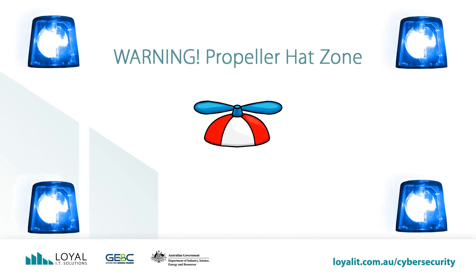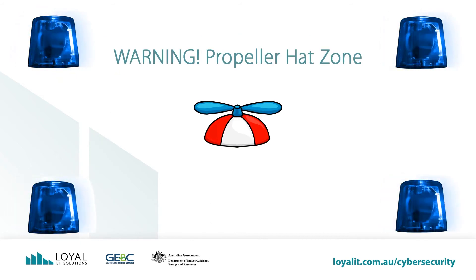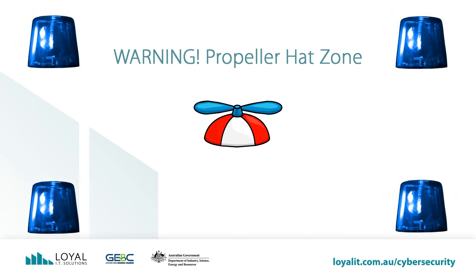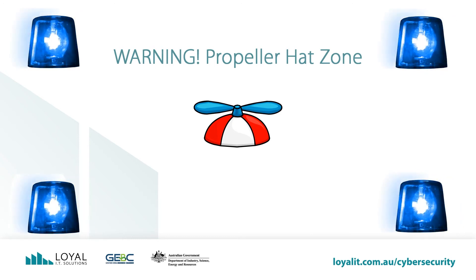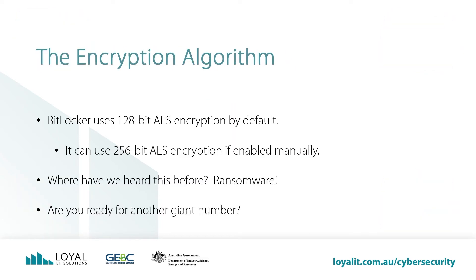It's time for a propeller hat zone. We'll be talking about the mathematics of the encryption key. BitLocker uses 128-bit AES encryption by default, but it can use 256-bit AES encryption if enabled manually. Where have we heard about 256-bit AES encryption before? That's right — ransomware uses it. Remember, if the hackers use it, then it must be a quality encryption product.